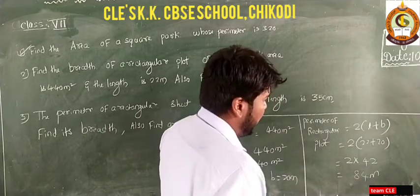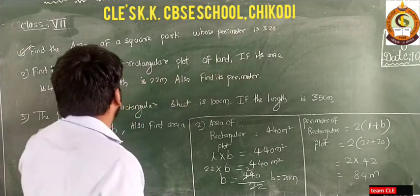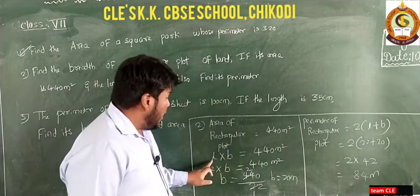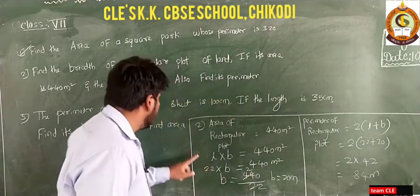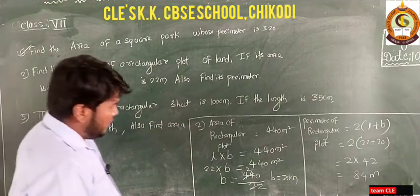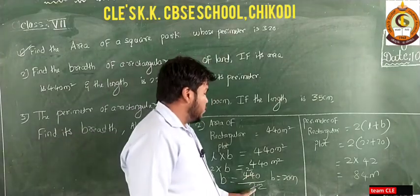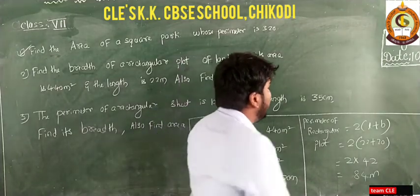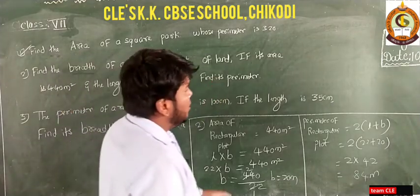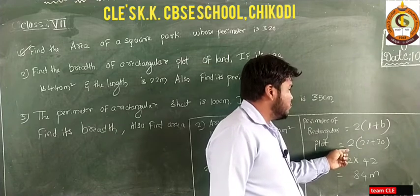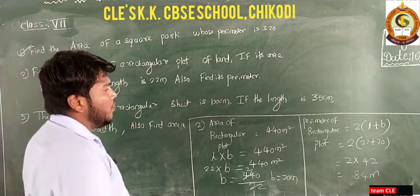Pause the video to note down question two. To summarize: area of rectangular plot equals 440 meter square; using area equals length into breadth, with length 22 meters, breadth equals 440 divided by 22 equals 20 meters. Perimeter of rectangular plot equals two into L plus B equals two into 22 plus 20 equals 84 meters. I hope you understood the second question.